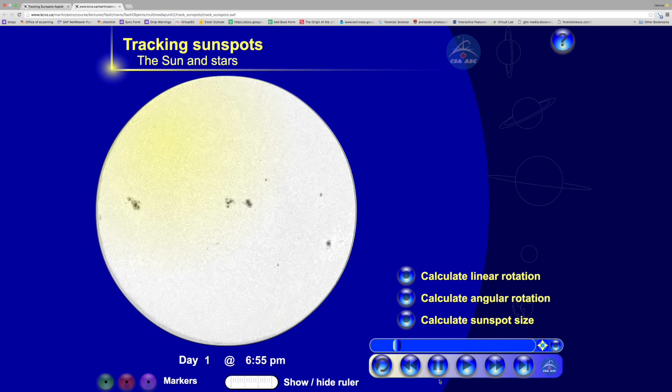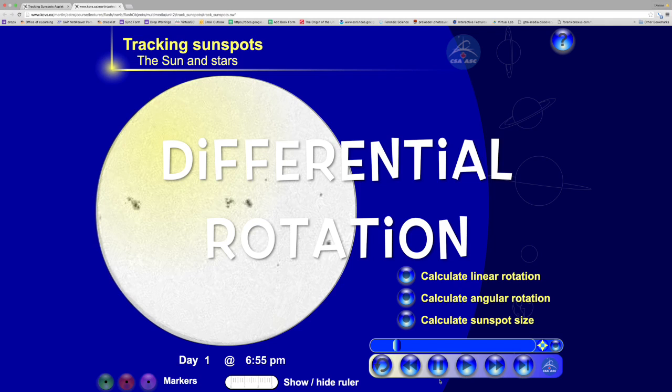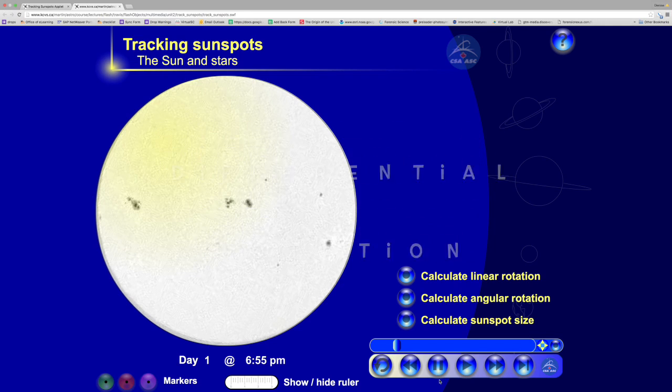We're going to complete the sunspot lab. By now, after doing your pre-lab, you should understand the term differential rotation and that the Sun undergoes differential rotation. To complete this lab is quite simple - we're just going to track sunspots over a period of time in their movement.